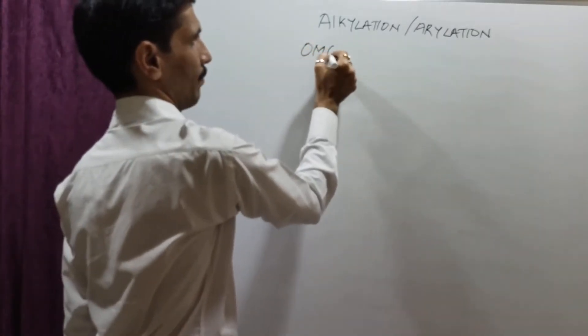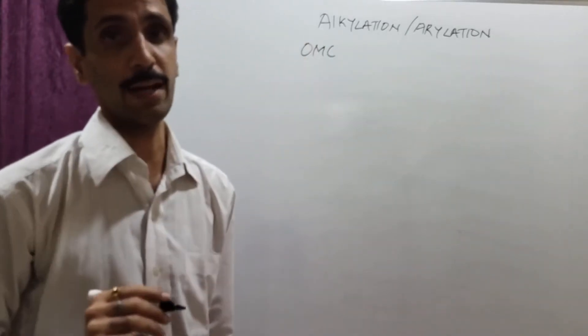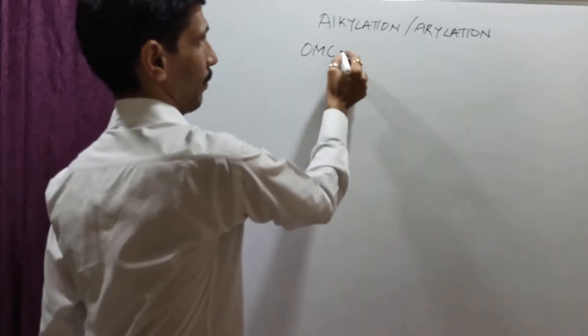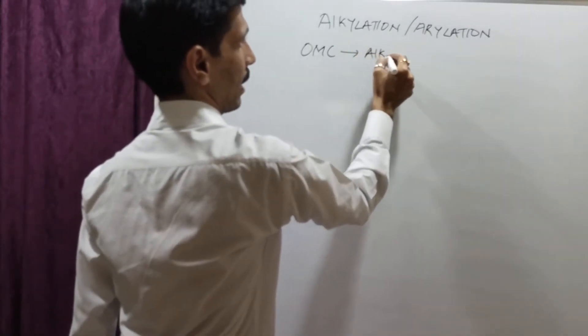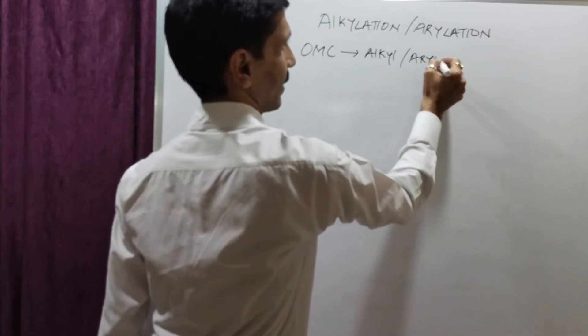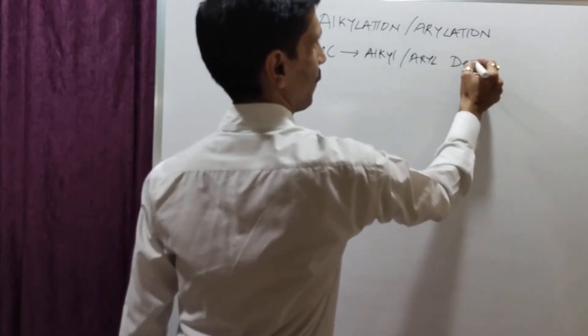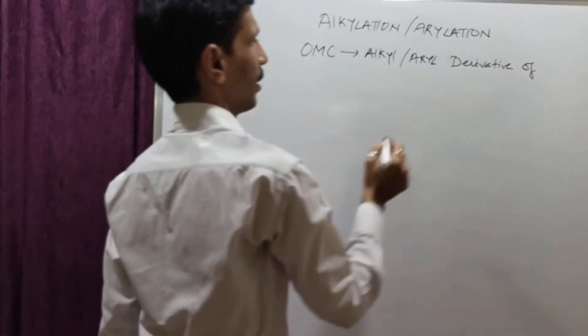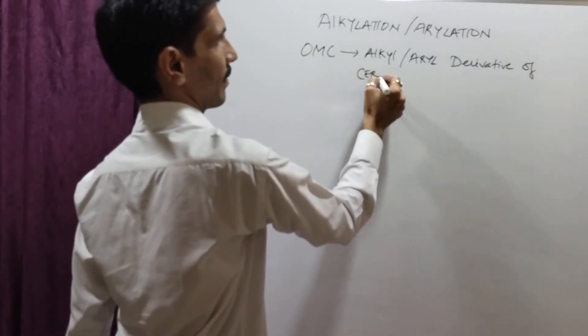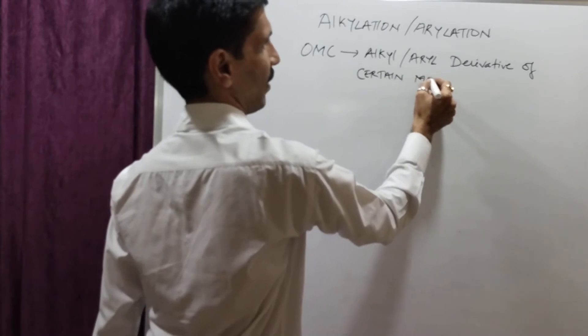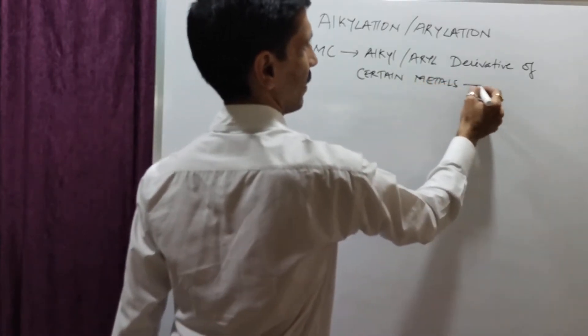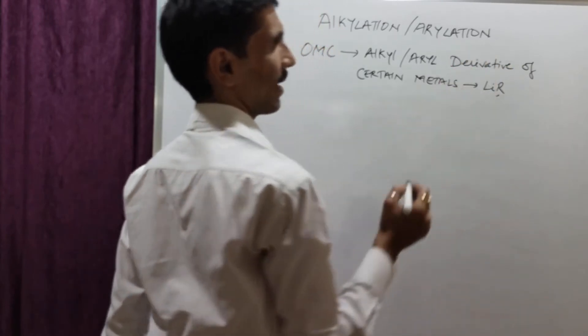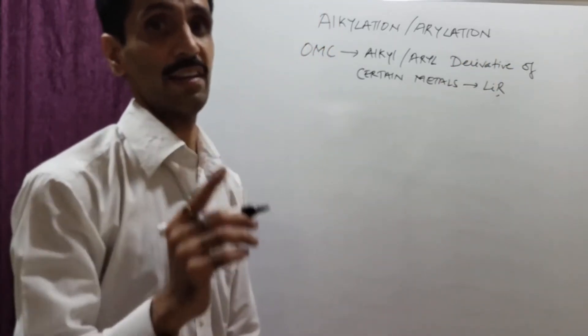In alkylation and arylation, we have an organometallic compound. Now, what type of organometallic compound? It will be an alkyl or aryl derivative of certain metals, generally electropositive metals, such as lithium. So I have LiR, because lithium is monovalent, its valency is 1.